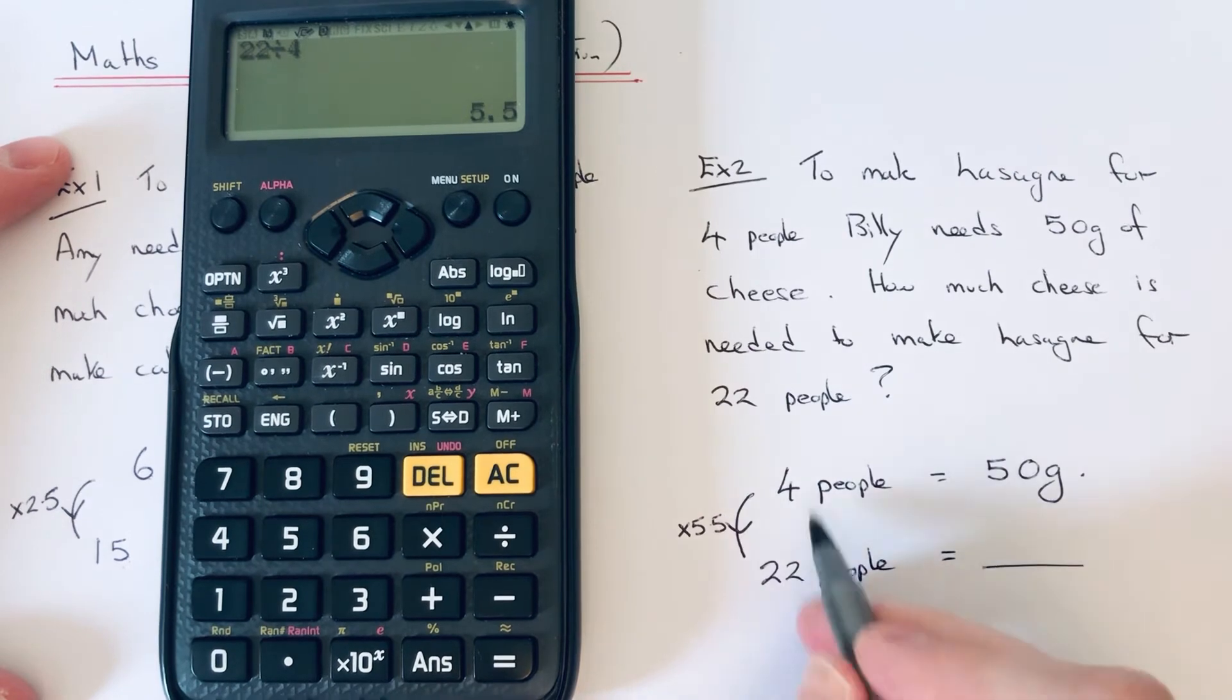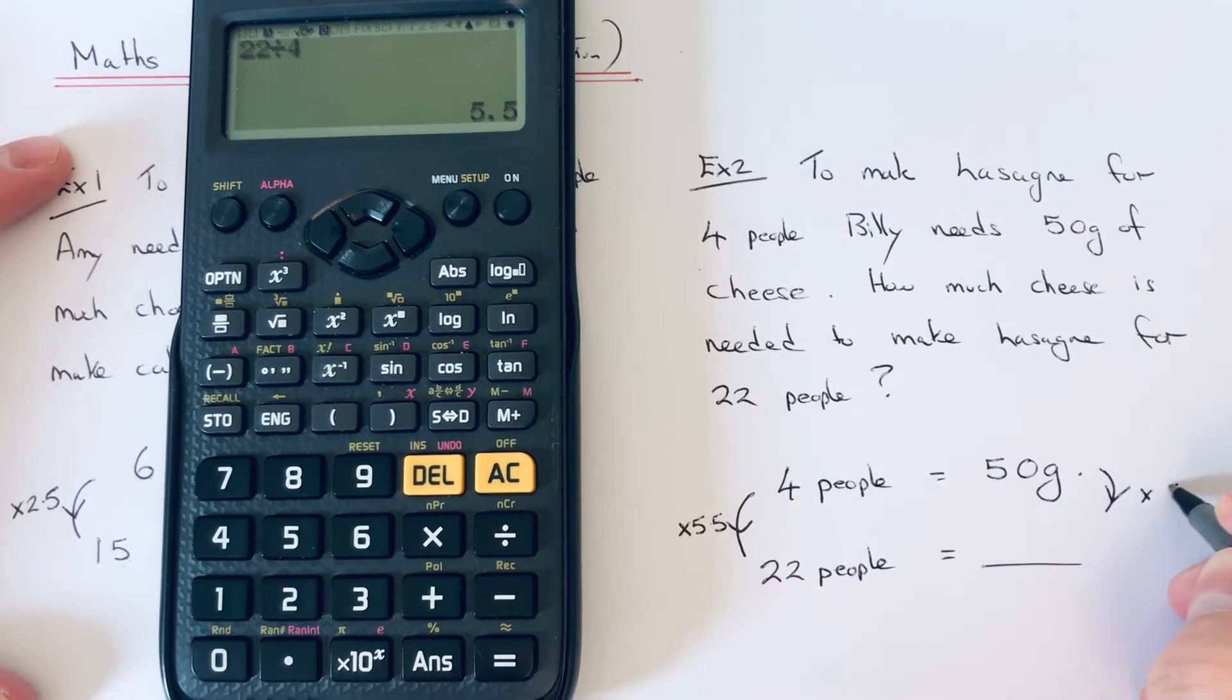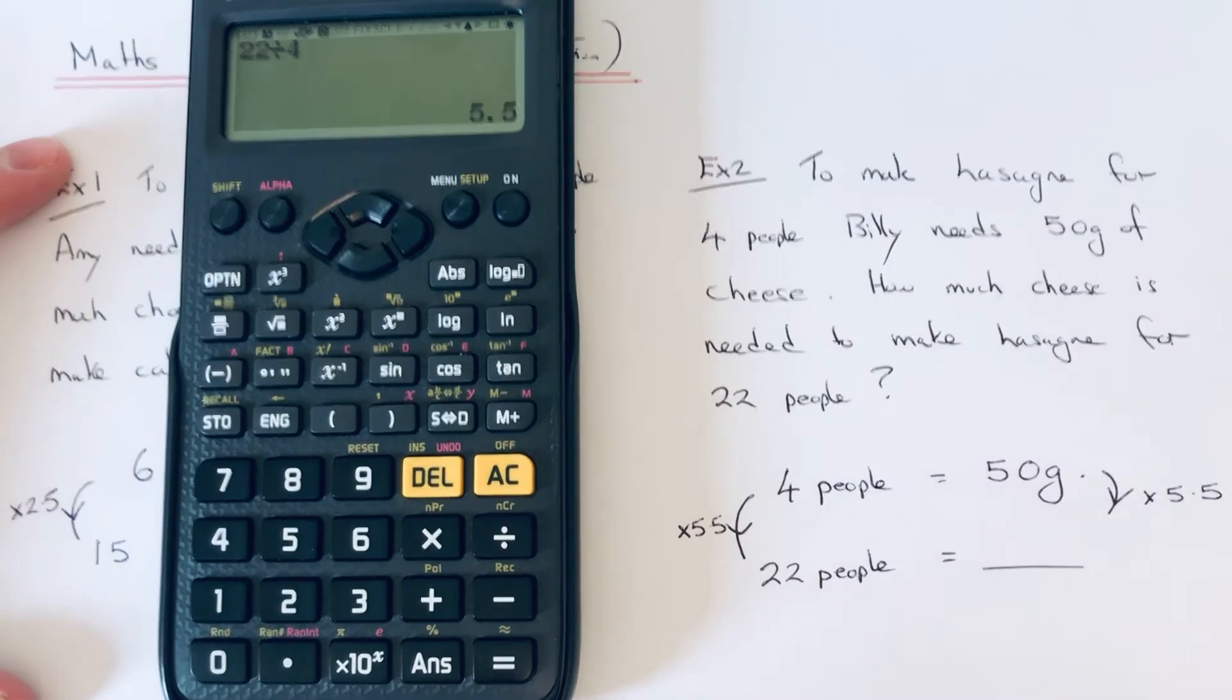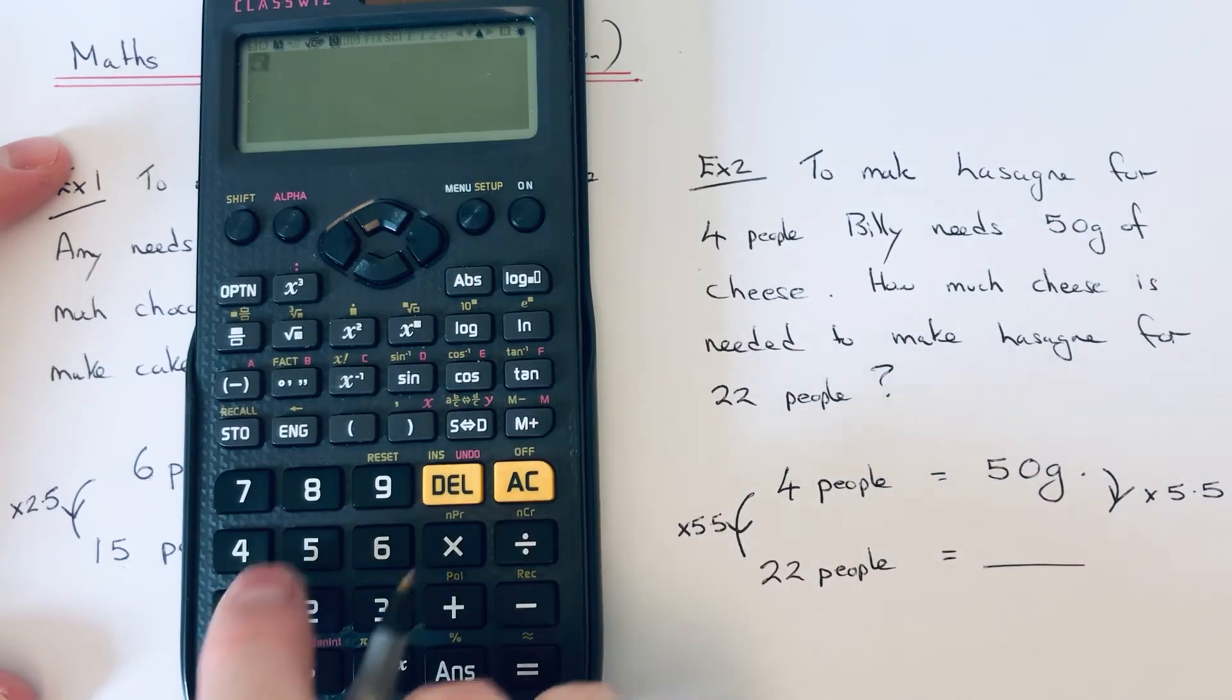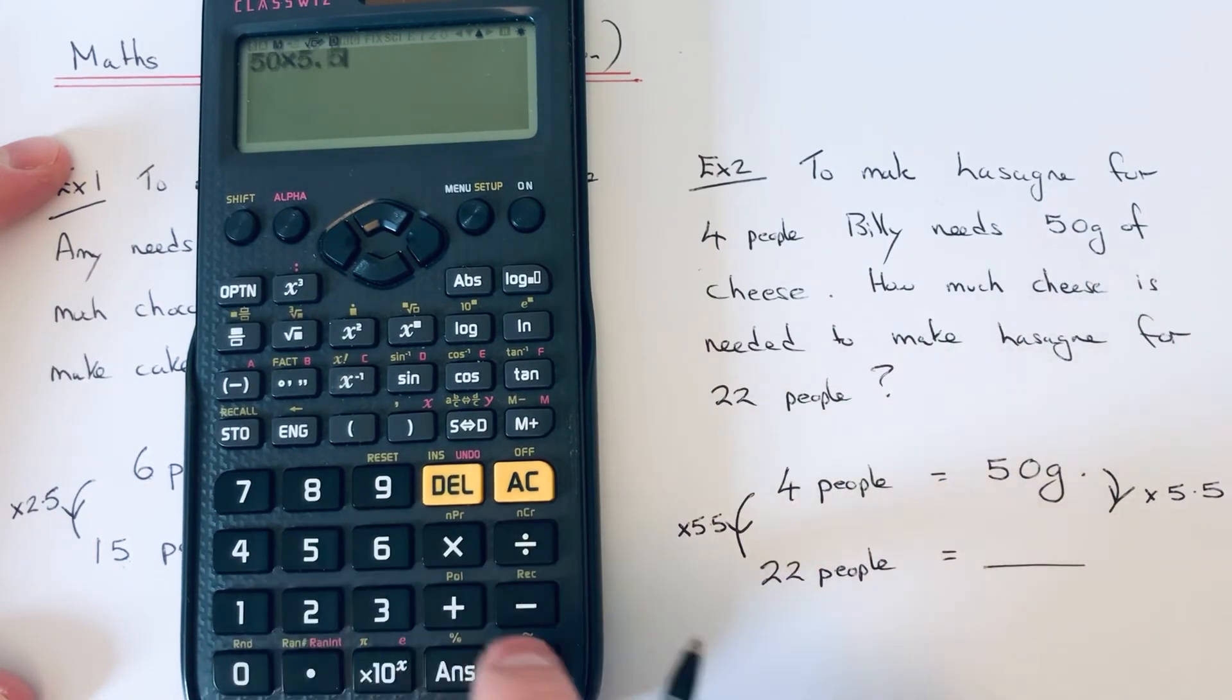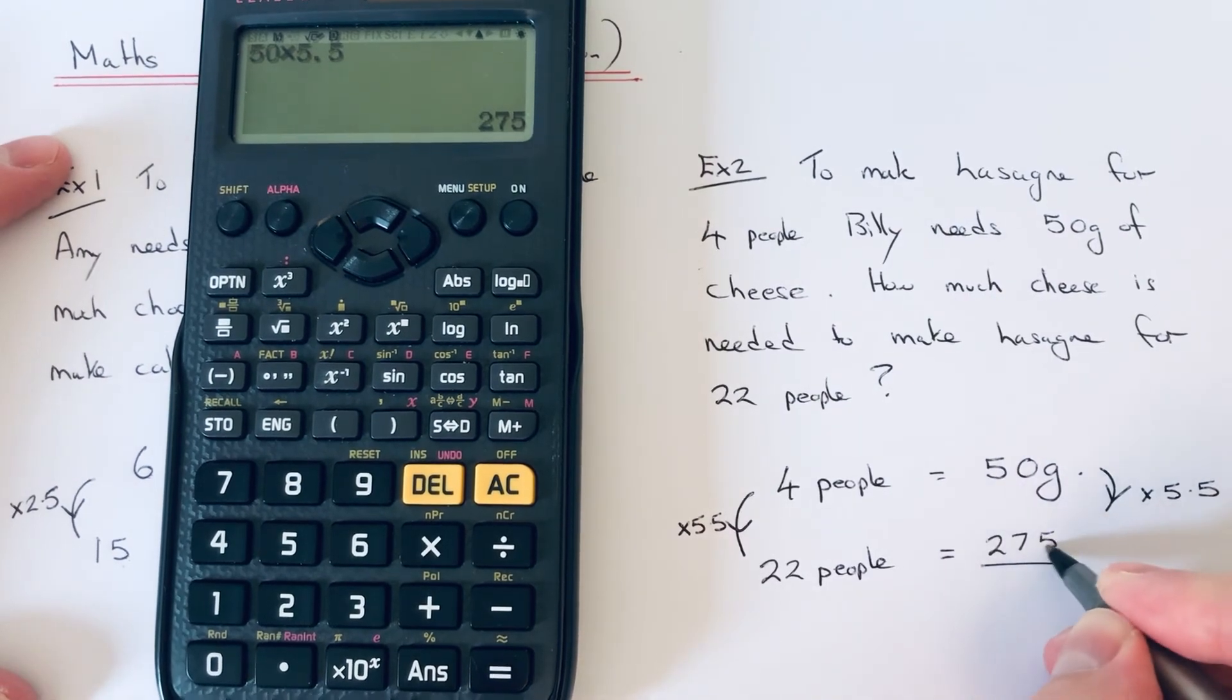So if the people's 5.5 times bigger, then the cheese side will also be 5.5 times bigger. So we just need to work out 50 times 5.5, and that is 275 grams.